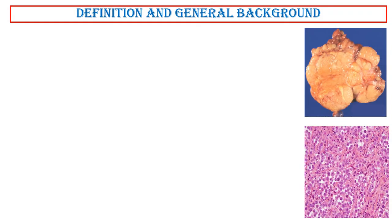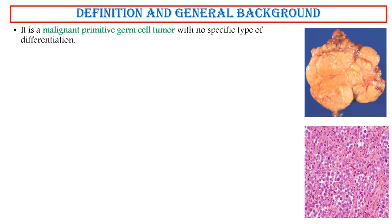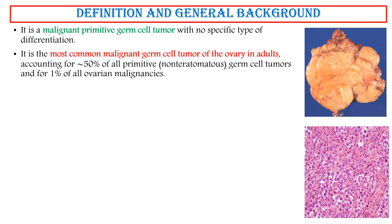Definition and general background. Dysgerminoma is a malignant primitive germ cell tumor with no specific type of differentiation. It is the most common malignant germ cell tumor of the ovary in adults, accounting for approximately 50% of all primitive, non-teratomatous germ cell tumors, and for 1% of all ovarian malignancies.